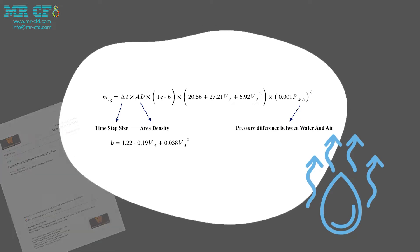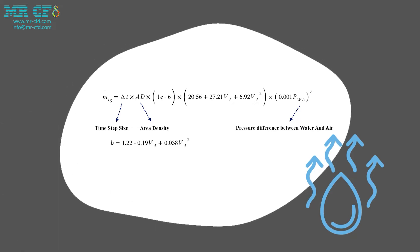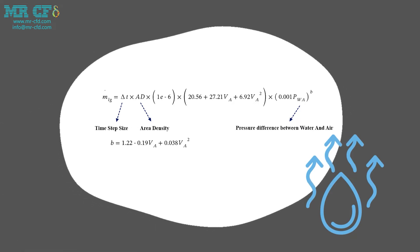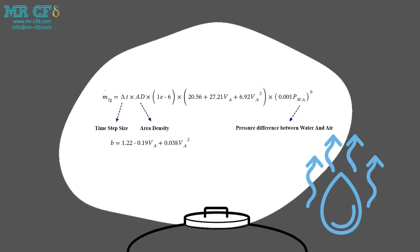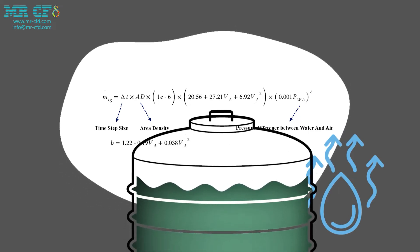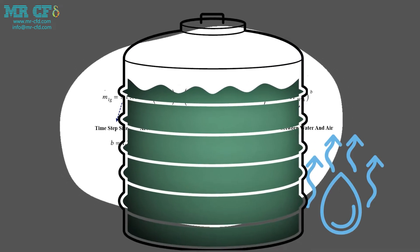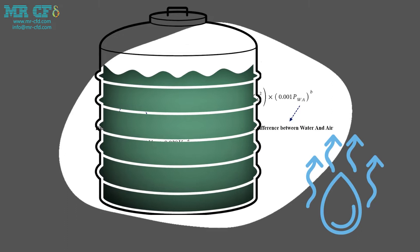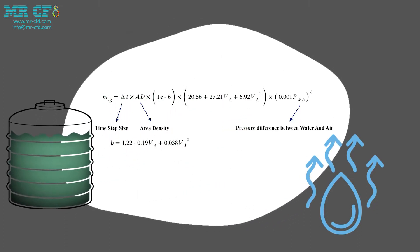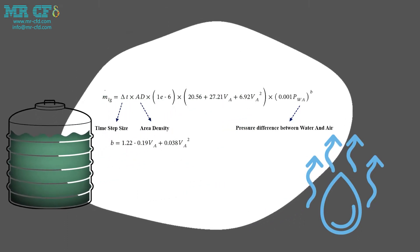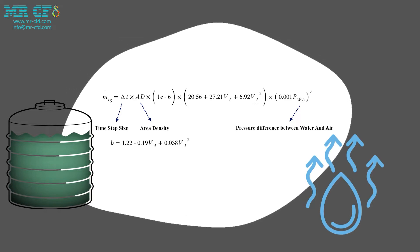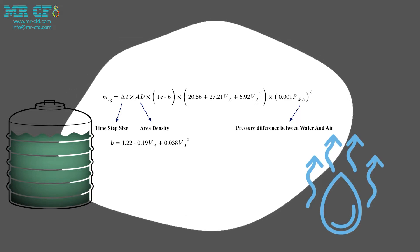The user-defined function is written for a semi-fuel tank containing water and air. It goes without saying that the multiphase model should be employed to simulate the problem. The mass transfer rate equation relates to the time step size, area density, air velocity, and the pressure difference between water and air.